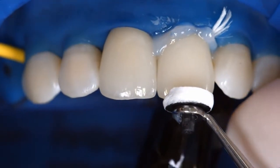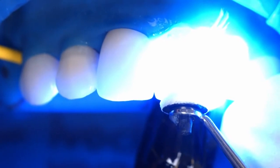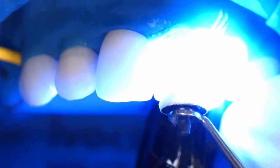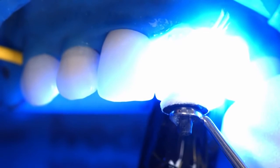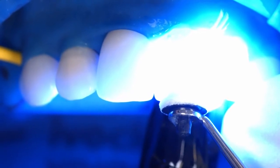Light cure all cement lines again for 10 seconds per segment and per millimeter ceramic, using for example Bluephase Style at a light intensity of 1100 milliwatts per square centimeter.